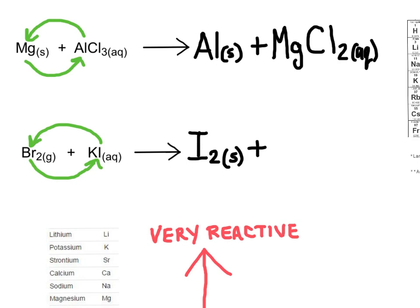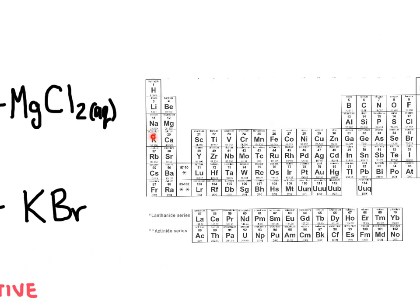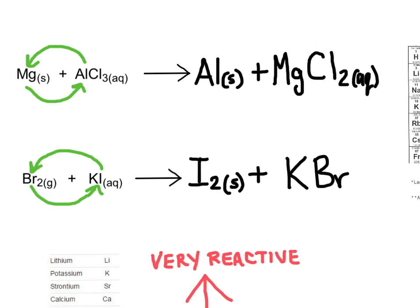Now bromine combines with potassium to form an ionic compound, so I need to check the charges. Potassium is in group 1, giving it a plus 1 charge; bromine is in group 7, giving it a minus 1 charge. Since the charges are equal and opposite — plus 1 and minus 1 — I only need one of each, giving KBr. I'll indicate this product is aqueous.